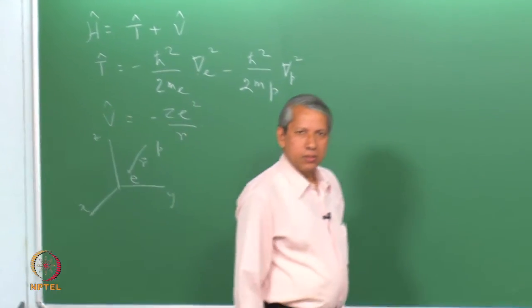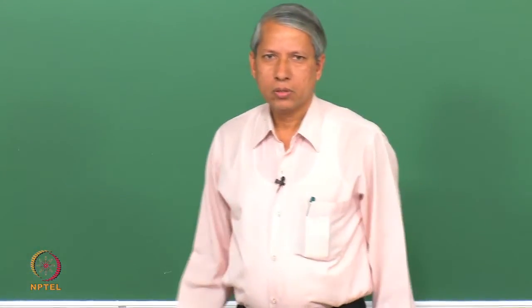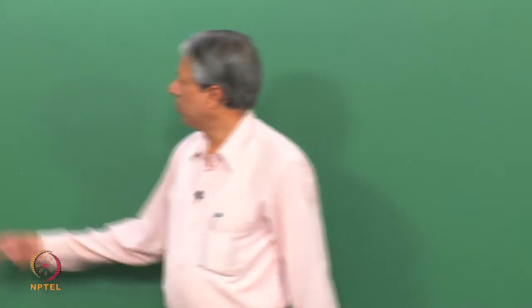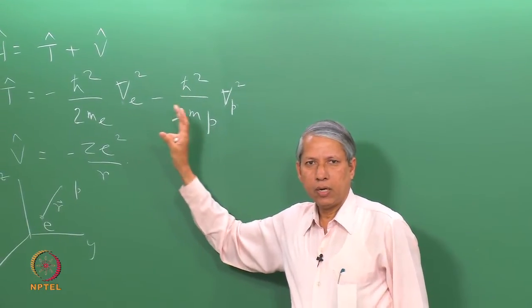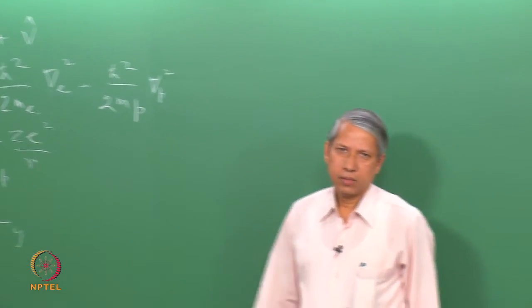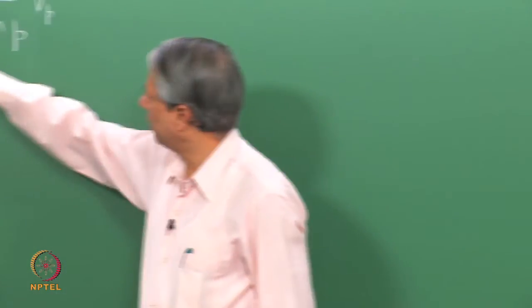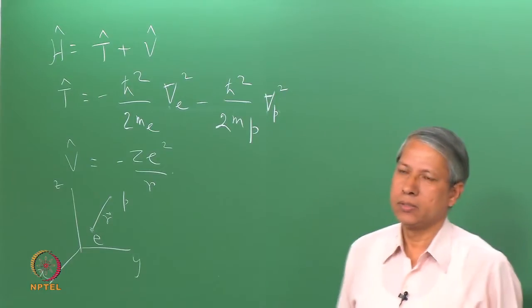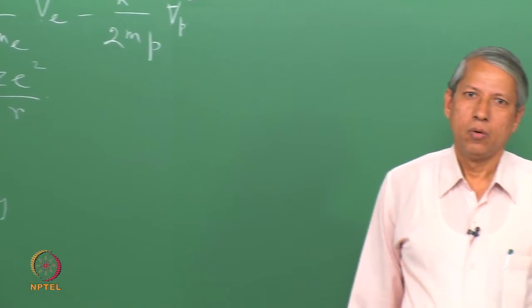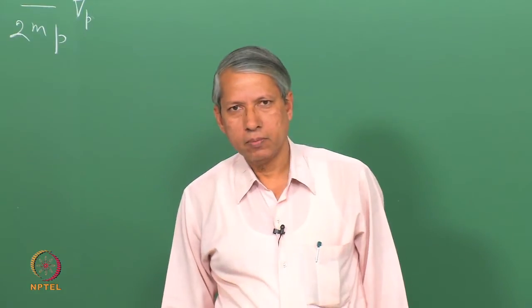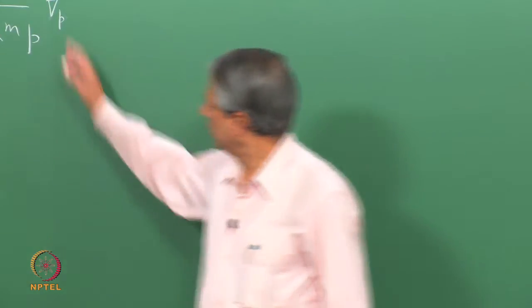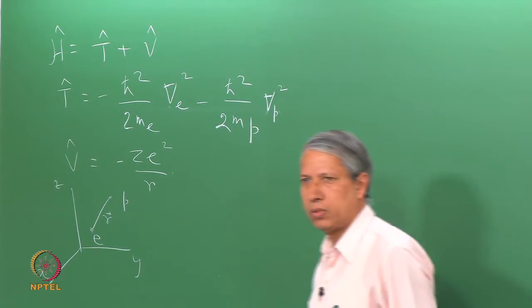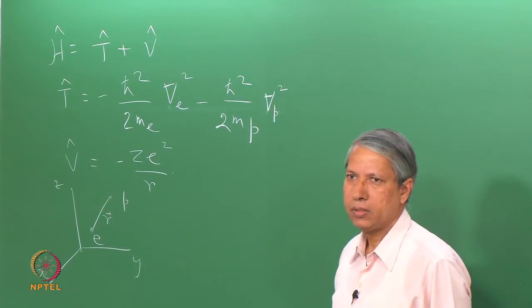In magnetic resonance, we do not worry at all about these types of interactions — the kinetic and Coulomb potential terms. These are treated as a constant energy that the system has, and these terms are not used; they just give us a constant energy of the system.